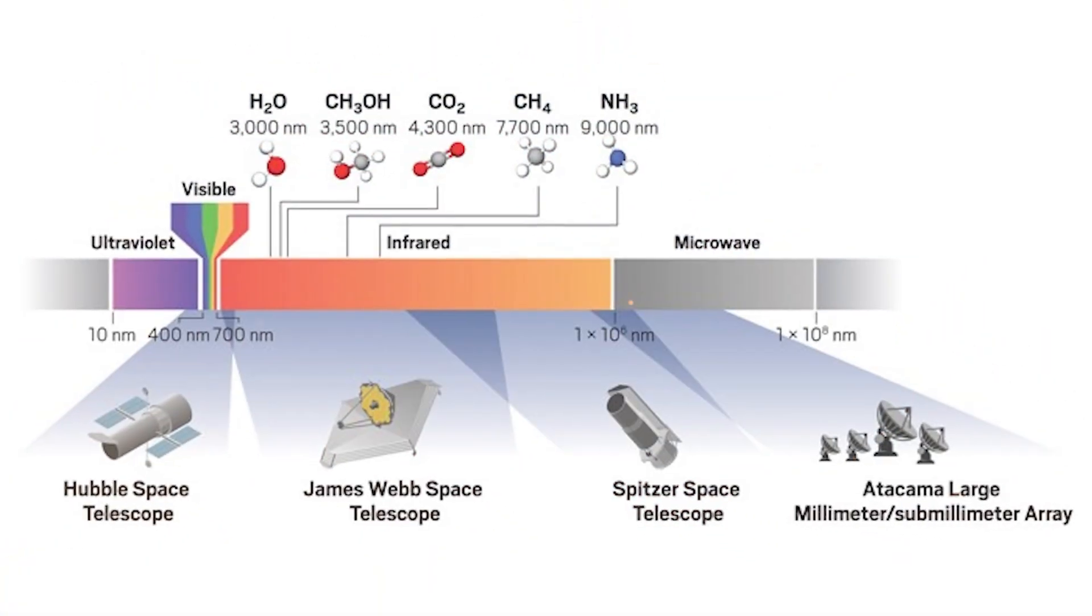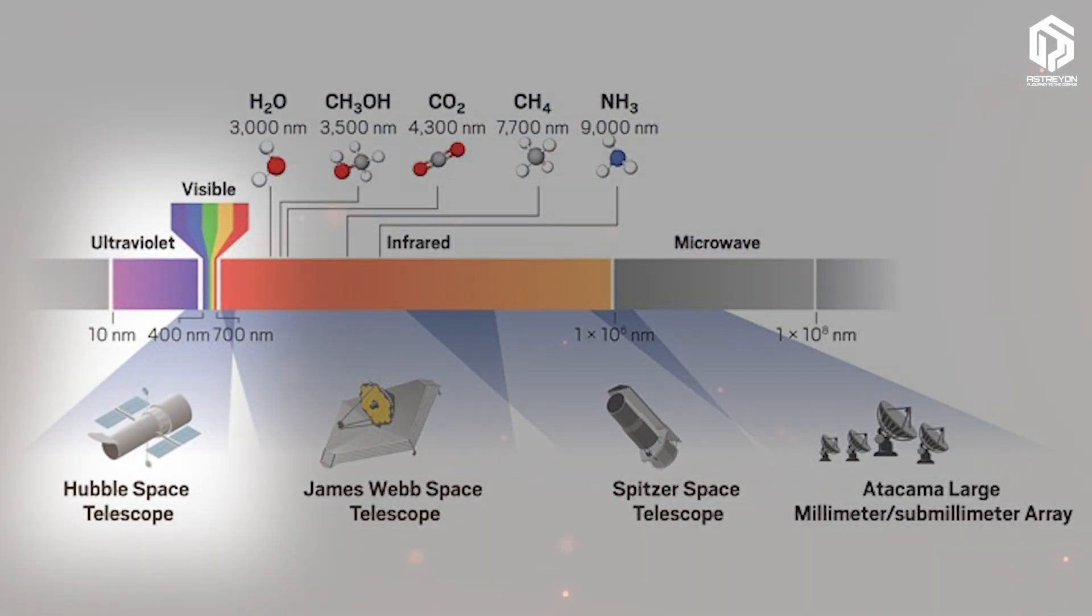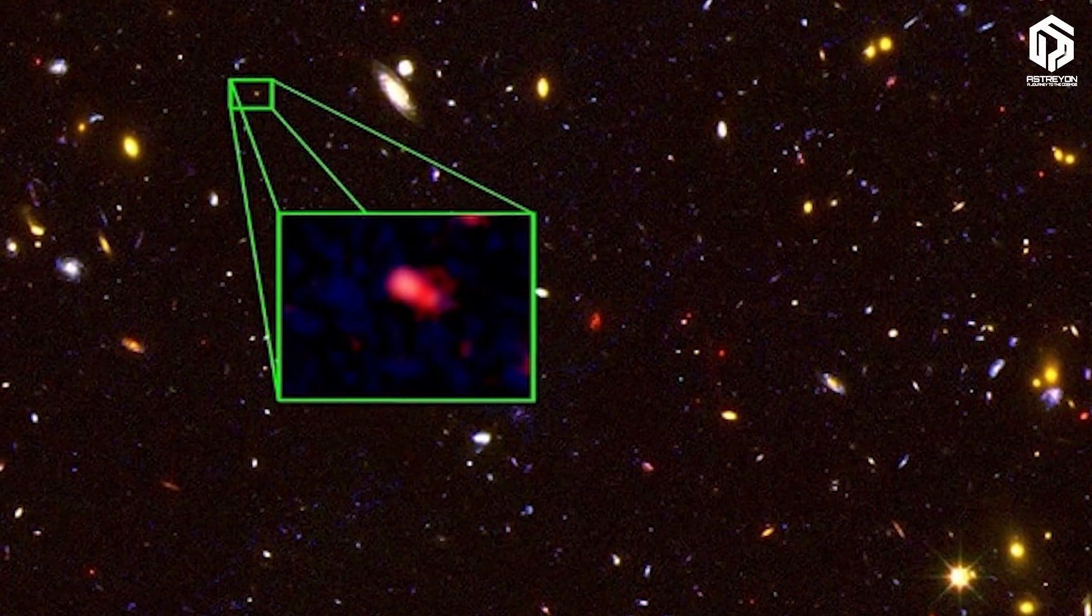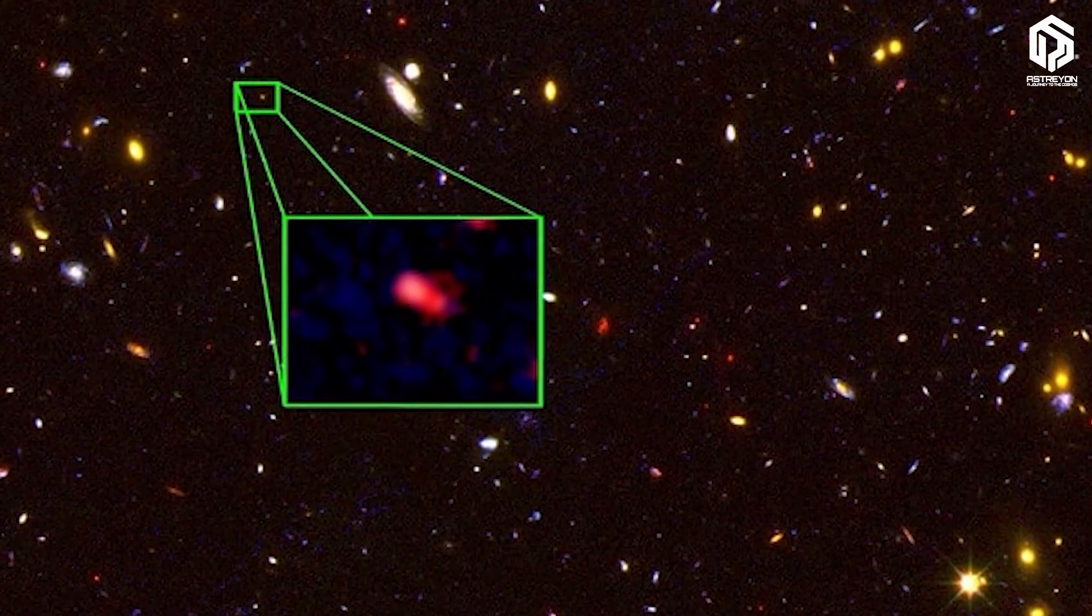Hubble works mainly in visible and ultraviolet light and is more limited for the early universe, while JWST, focusing on infrared, bypasses dust and reveals hidden galaxies. And this comparison shows how JWST has found tens of times more early galaxies than Hubble.